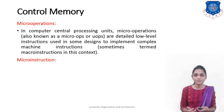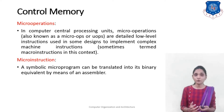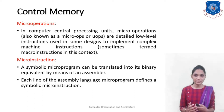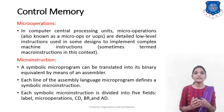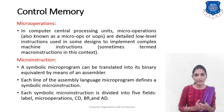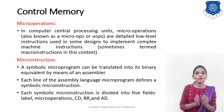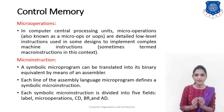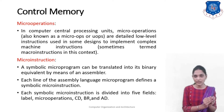A symbolic micro-program can be translated into a binary equivalent by means of an assembler, as we already learned. Each line of the assembly language program defines a symbolic micro-instruction. Each symbolic micro-instruction is divided into five fields: label, micro-operations, CD, BR, and AD. What CD, BR, and AD mean we will see further onwards.